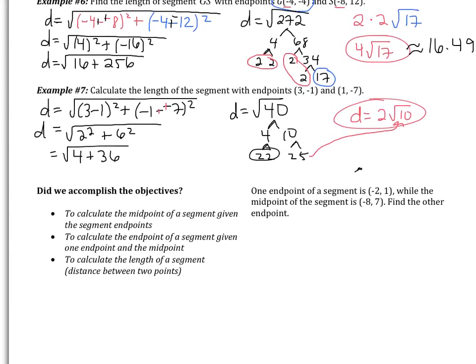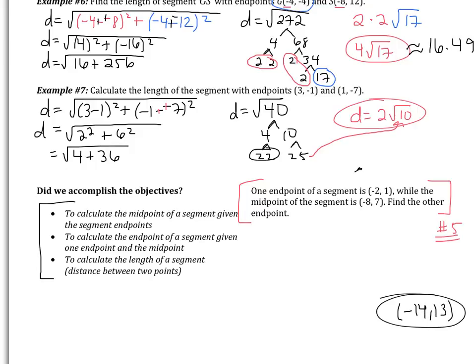That is the end of notes. Looking at our objectives, we did three things today: we calculated a midpoint using the endpoints with the midpoint formula; we calculated an endpoint given one endpoint and the midpoint, like in example 5; and we calculated the distance using the distance formula. You have one final example to do on your own, similar to example 5. I'll tell you the answer is (negative 14, 13) to help you check your work. Bring any questions to class tomorrow!